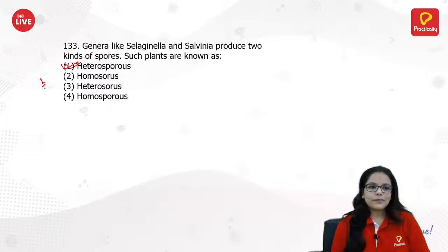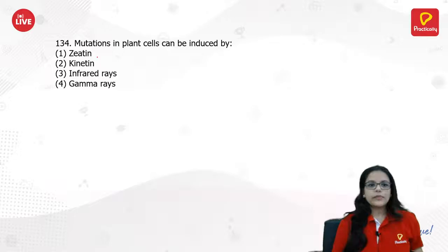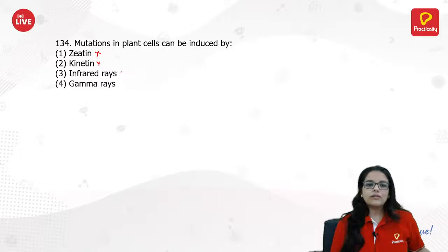Mutations in plant cells can be induced by: zeatin and kinetin are all hormones. Infrared rays are not strong enough to induce mutation. Gamma rays can induce mutation.